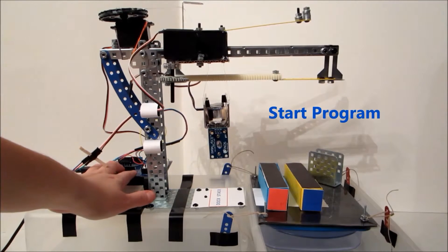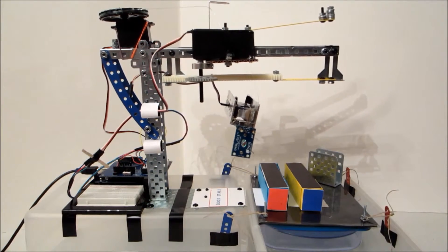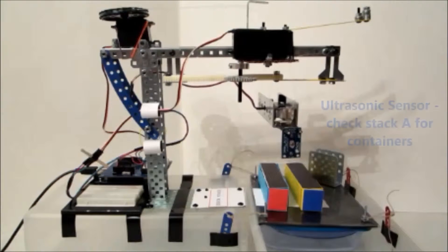In this video, the crane will detect and move one container from stack A and one container from stack B. Note the red annotations, which indicate a necessary manual adjustment or a complication with the crane's operation.